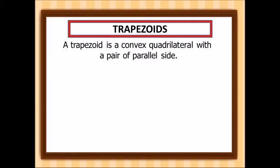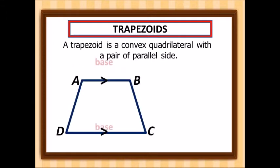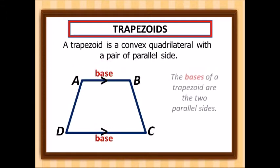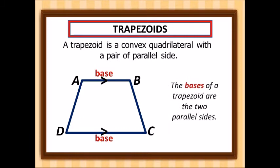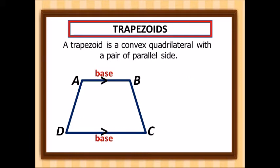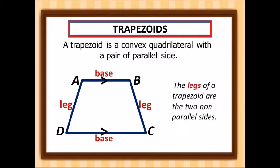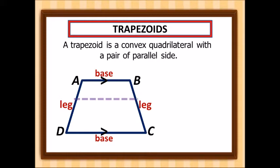Now let's look at the different parts of a trapezoid. The bases of a trapezoid are the two parallel sides. The legs of a trapezoid are the two non-parallel sides. So the bases are the parallel sides and the legs are the two non-parallel sides.